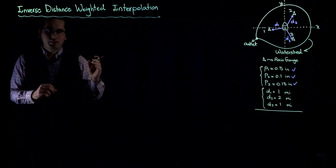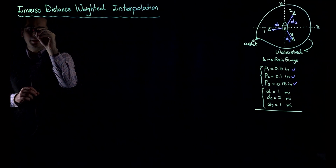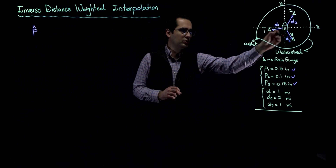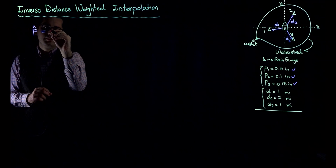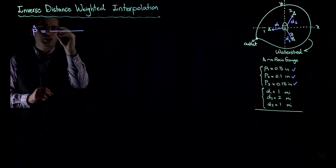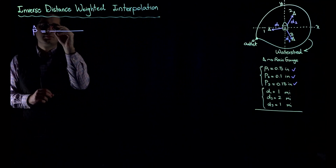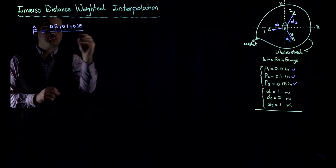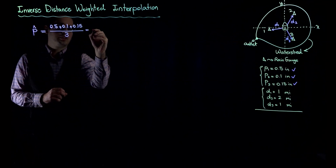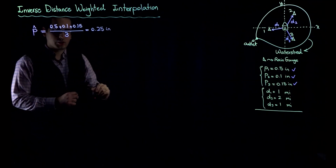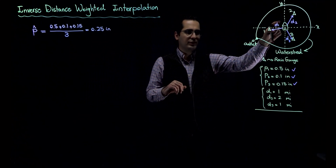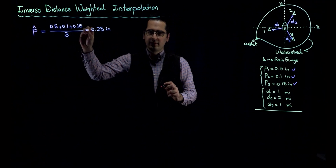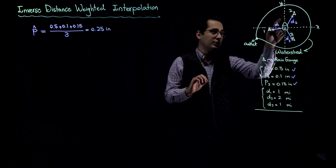The easiest way to estimate rainfall at a location — let's say your house — when you have some rain gauges one, two, and three, is arithmetic mean. So you sum all the rainfall values: 0.5 inches plus 0.1 plus 0.15, divided by the number of rain gauges, and you come up with 0.25 inches. You report that as the amount of rainfall at your house.